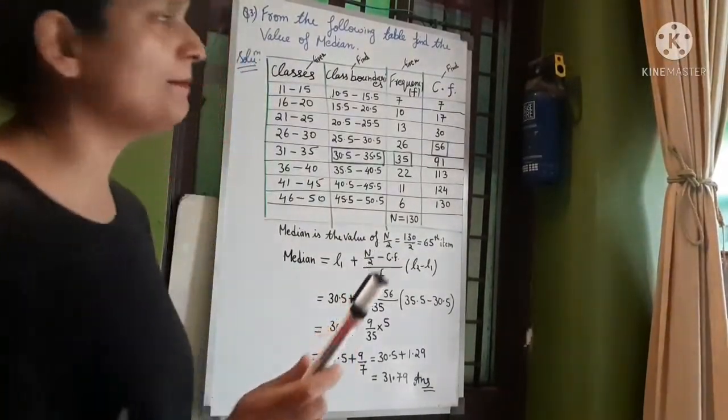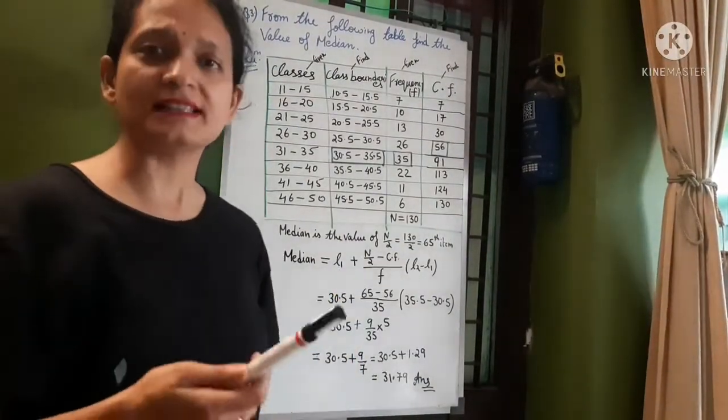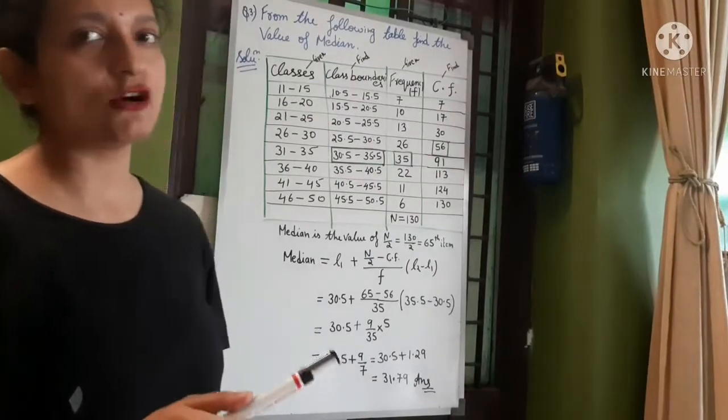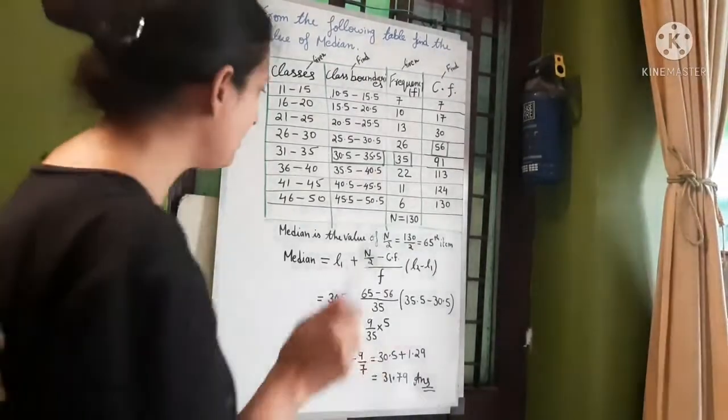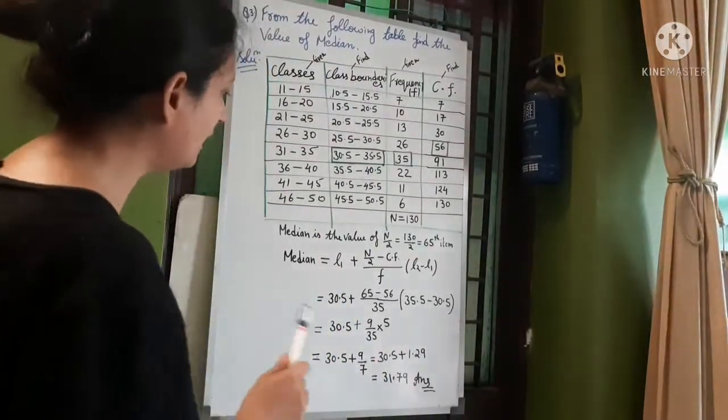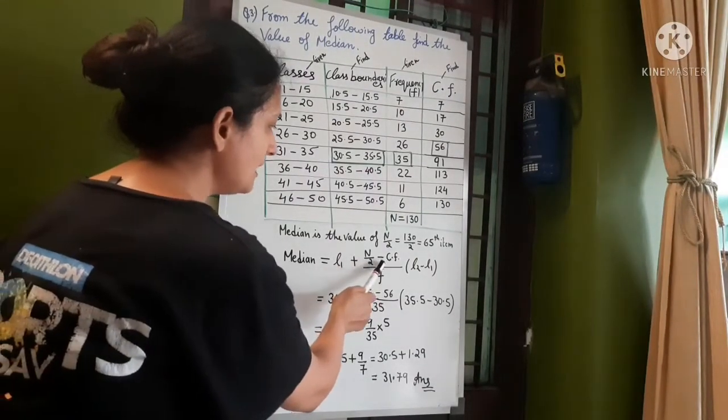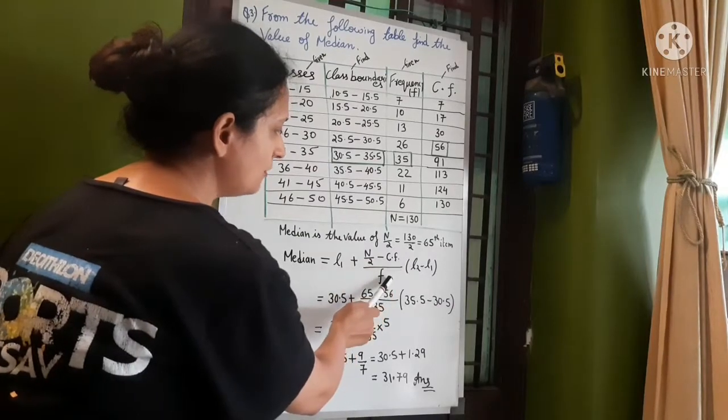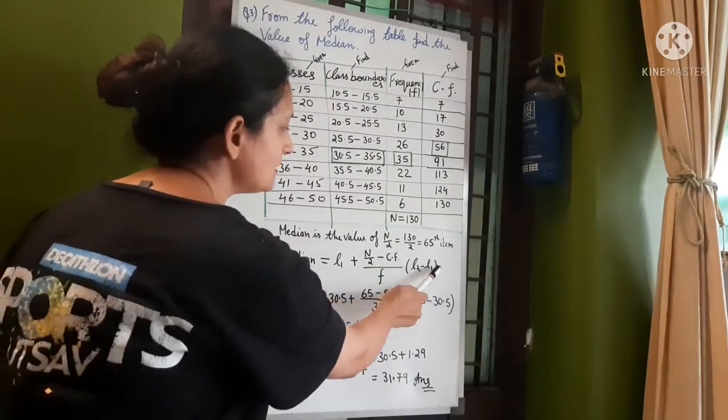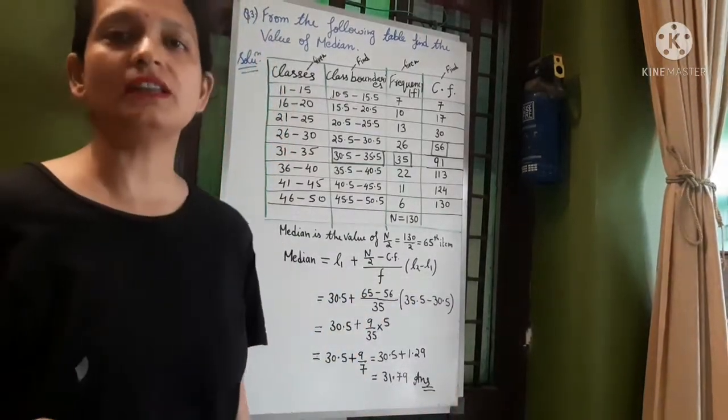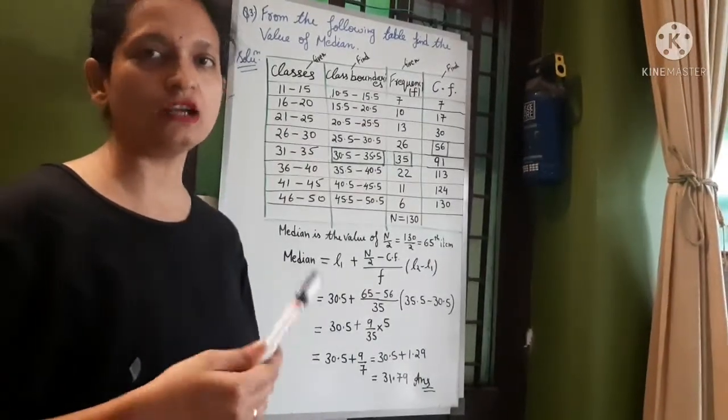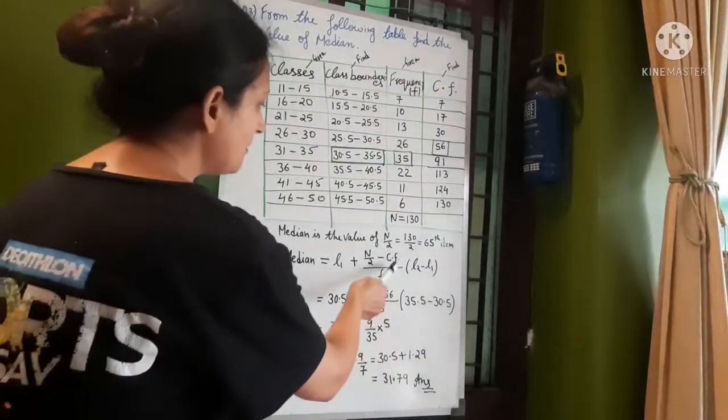Now if your data is in classes, then median changes. Then median is equal to l1 plus n by 2 minus cumulative frequency upon frequency into l2 minus l1. Lower class, cf, frequency f.